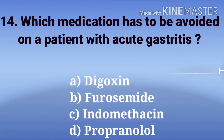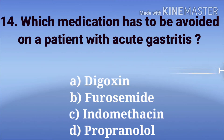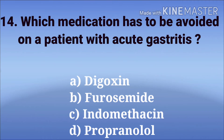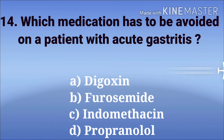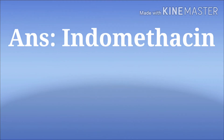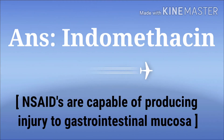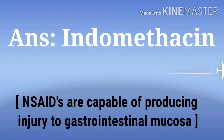Which medication has to be avoided in a patient with acute gastritis? The options are digoxin, furosemide, indomethacin, and propranolol. The answer is indomethacin. Indomethacin is an NSAID, and NSAIDs are capable of producing injury to gastrointestinal mucosa.